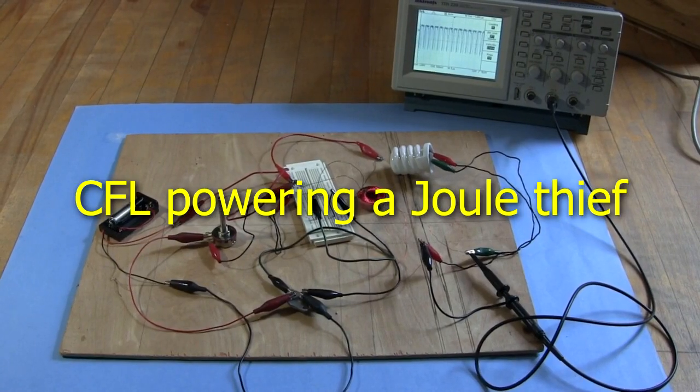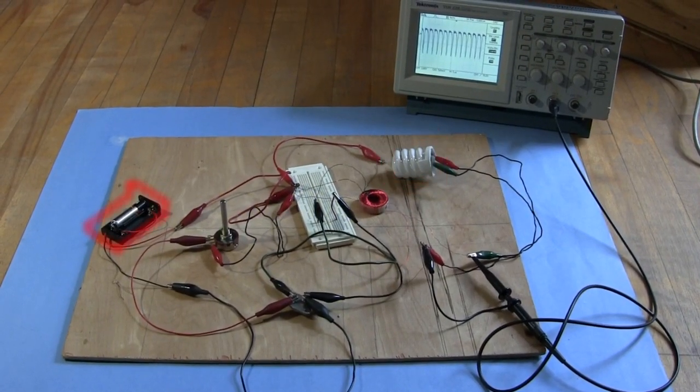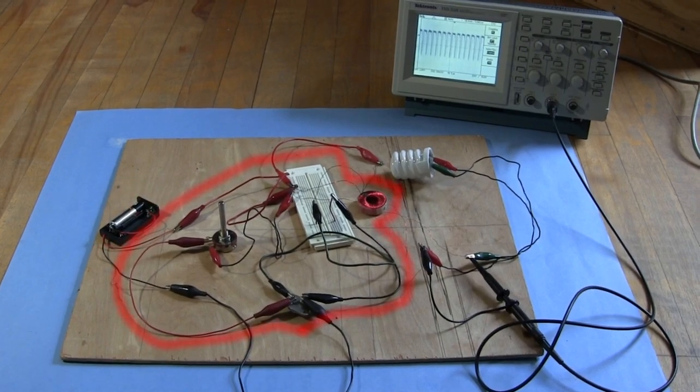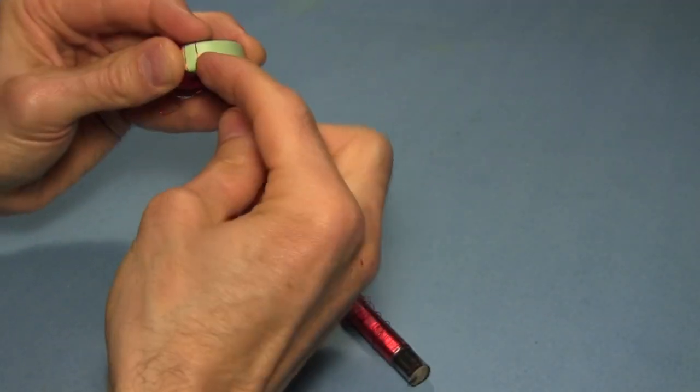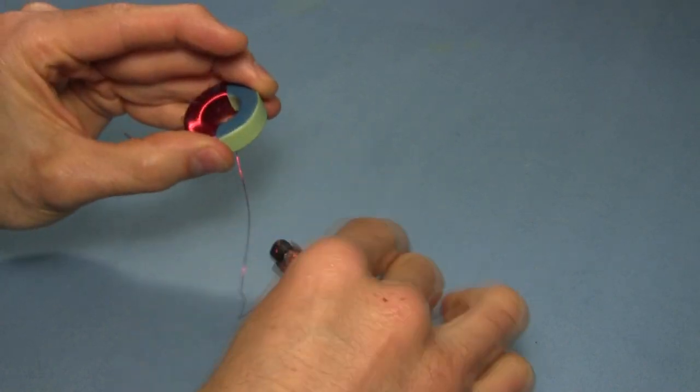And another work in progress is lighting a compact fluorescent light bulb using just a AA battery and the Joule Thief circuit. I'm still working on the right windings for the coil around my toroid for that one. And there's a lot of time-consuming winding involved.